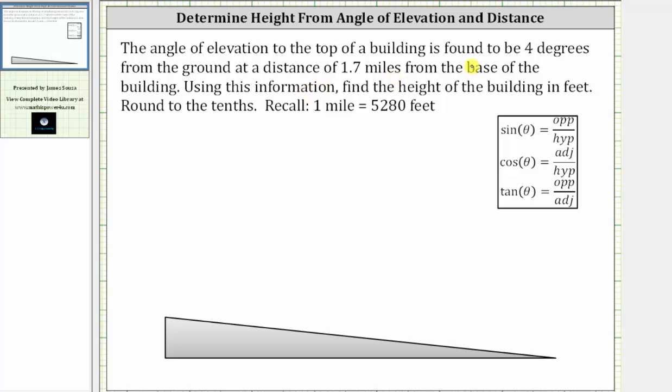The angle of elevation to the top of a building is found to be four degrees from the ground at a distance of 1.7 miles from the base of the building. Using this information, find the height of the building in feet and we're told to round to the tenths place value.